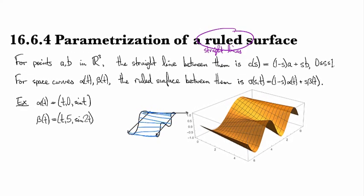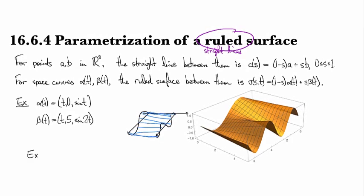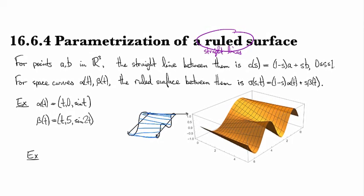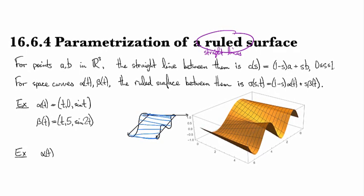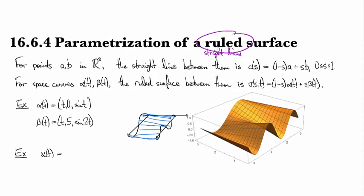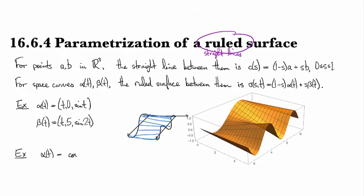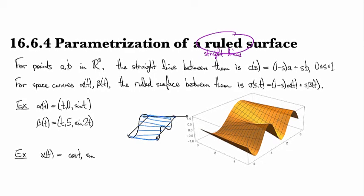I could also do something like, if I did α(t) to be (cos(t), sin(t), 1),